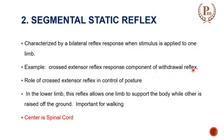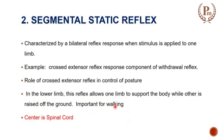The crossed extensor reflex is a component of the withdrawal reflex where a pain stimulus is involved. Its role in control of posture is very important — had it not been there, the person wouldn't maintain an erect posture. In the lower limb, this reflex allows one limb to support the body while the other is raised off the ground. It is also important for walking — one limb flexes while the other extends, then vice versa in a reciprocal pattern. That is how we are able to walk.